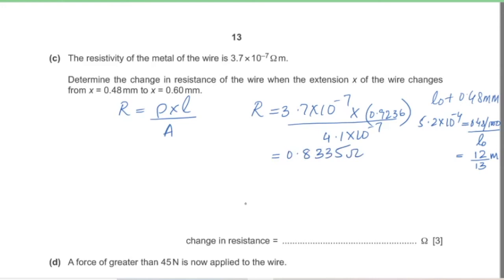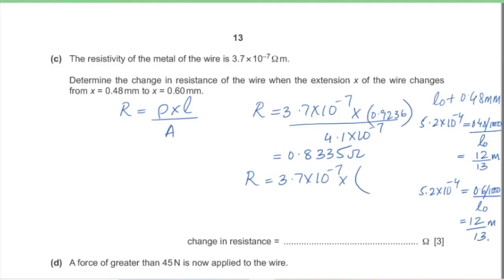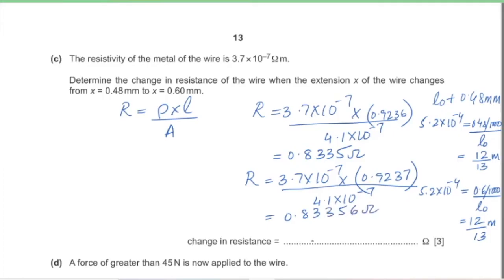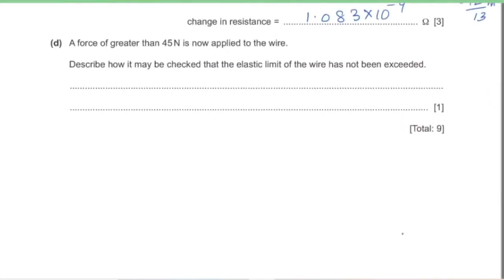At extension 0.6 mm, new length = 12/13 + 0.0006 = 0.9237 m, giving R = 3.7 × 10⁻⁷ × 0.9237 / (4.1 × 10⁻⁷) = 0.83356 Ω. The change in resistance = 1.083 × 10⁻⁴ Ω.